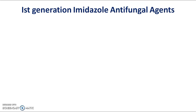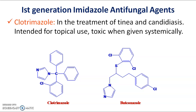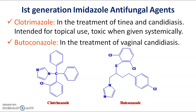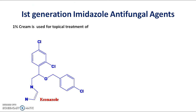The first generation imidazole antifungal agents include clotrimazole and butaconazole. Clotrimazole is used in the treatment of tinea and candidiasis; it is intended for topical use and is toxic when given systemically. Butaconazole is used in the treatment of vaginal candidiasis.